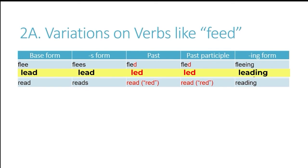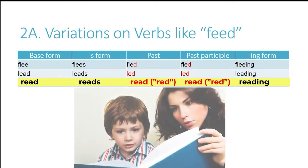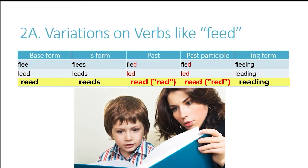That's important to remember because the last one can be kind of confusing, and this is the verb read. With read, when we go into the past and past participle we also change the sound — read, read — but for some reason the spelling is not changed. So it looks the same, but in the past and the past participle the sound is different; it sounds like the color red. In the base form it's read, the past is read, and the past participle is read, without changing the spelling.